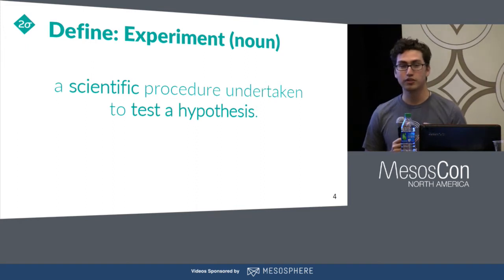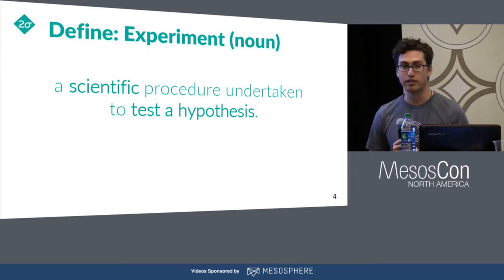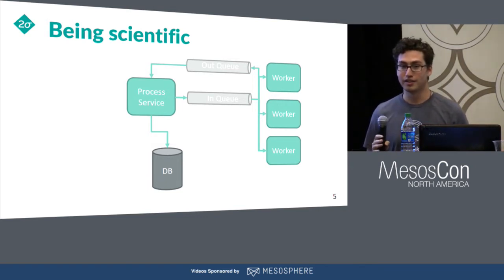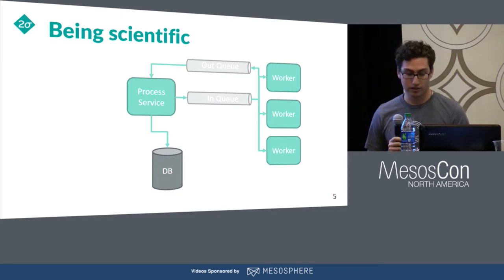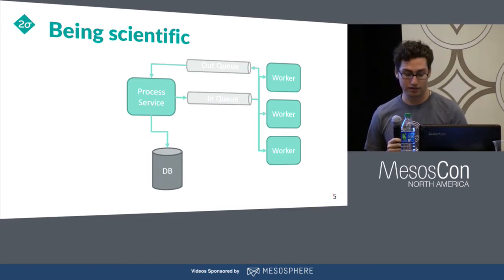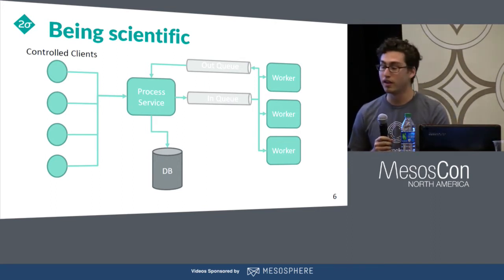Can we get closer to running real experiments in a scientific manner? This really boils down to: can we control the environment that our system runs in? Well, we could just stand up another copy of our production system and not tell anybody about it. If no one's touching it, it's pretty much controlled — nothing's really happening that doesn't happen from just the system's own processes. But this isn't a really interesting system; there's nothing happening. If we just send it production traffic, we're back to what we had in production, right? We've now lost any control we had. So what we can do is stand up synthetic clients. Now we control the entire environment.